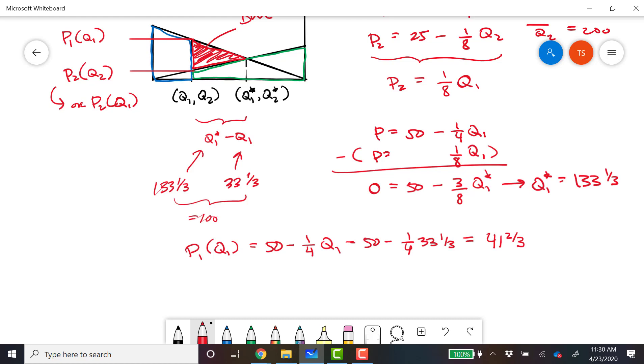Here, we also want P2 of Q1, which equals 1 eighth of Q1. We're using it as a supply curve. Equals 1 eighth of 33 and a third, which is 4 and 1 sixth.